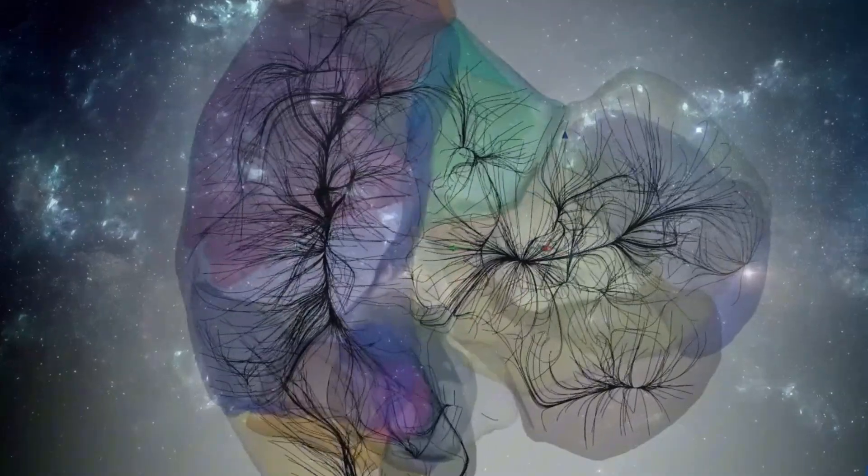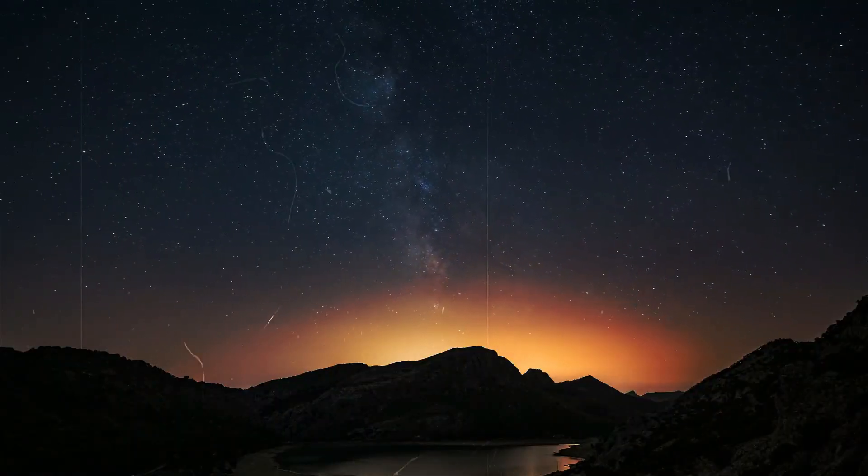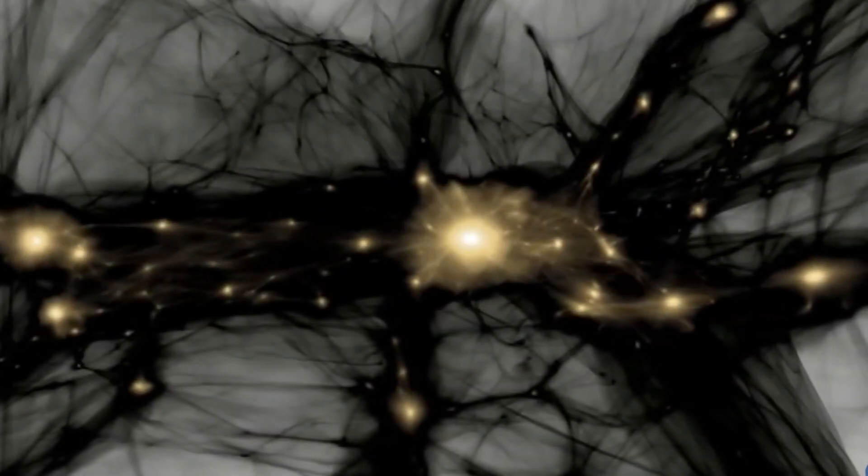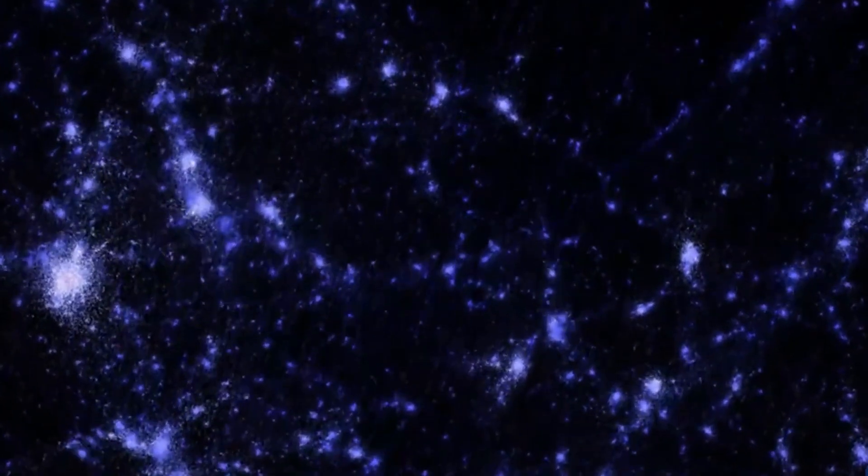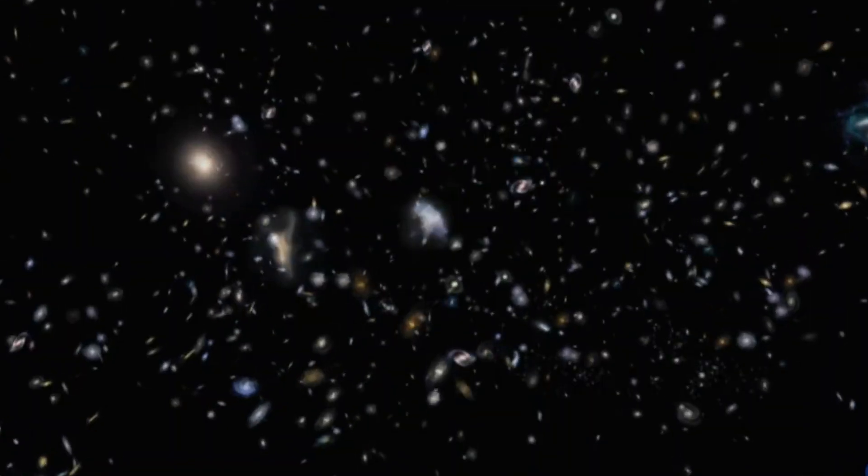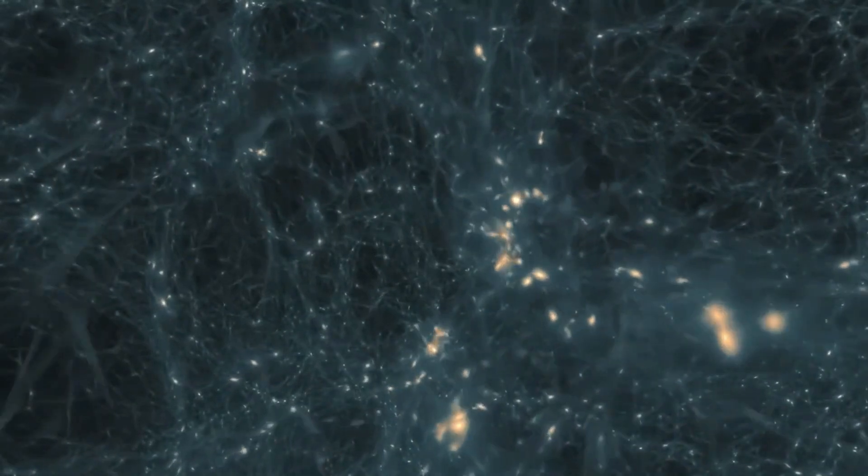Mapping these vast regions, however, is more complex. Visible light alone is not enough. Scientists must also account for dark matter, the invisible substance that constitutes around 85% of the universe's mass. While dark matter doesn't emit or reflect light, its gravitational influence on galaxies is significant. By analyzing how galaxies move, researchers can infer the presence of dark matter and its role in shaping these immense structures.